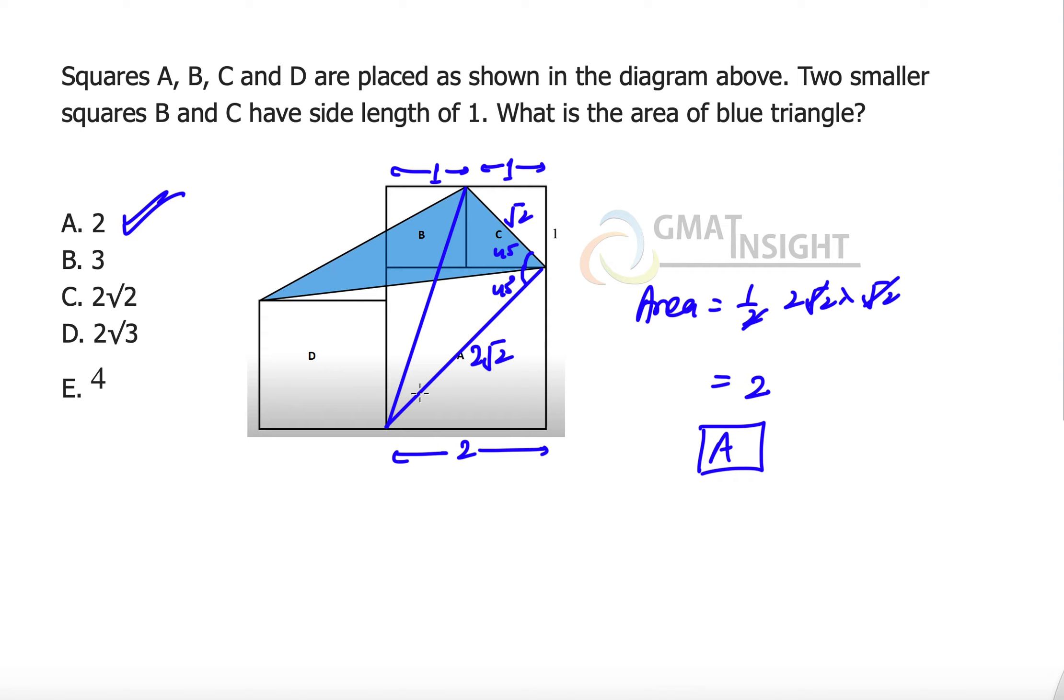So the total angle between these two lines will be 90 degrees and therefore I have taken the base as root 2 and the height as 2 root 2. 2 root 2 is calculated using the Pythagoras theorem or the 45-45-90 property.